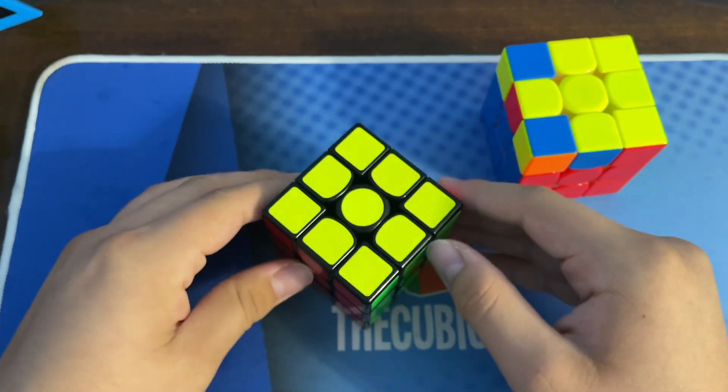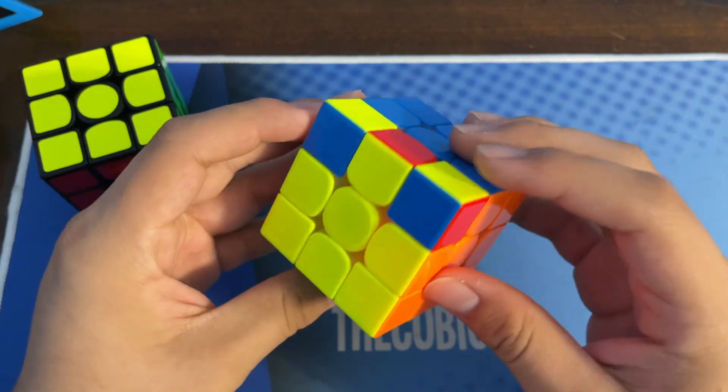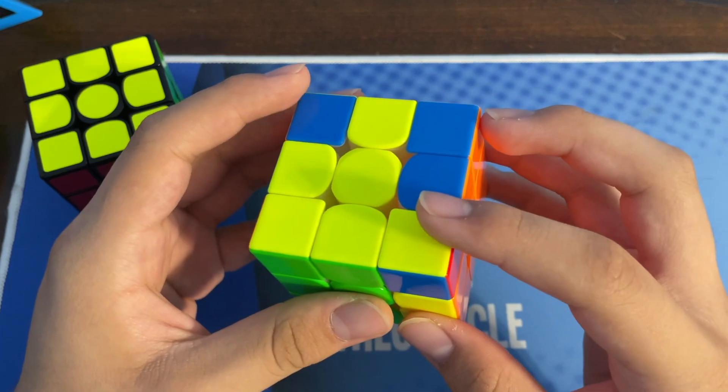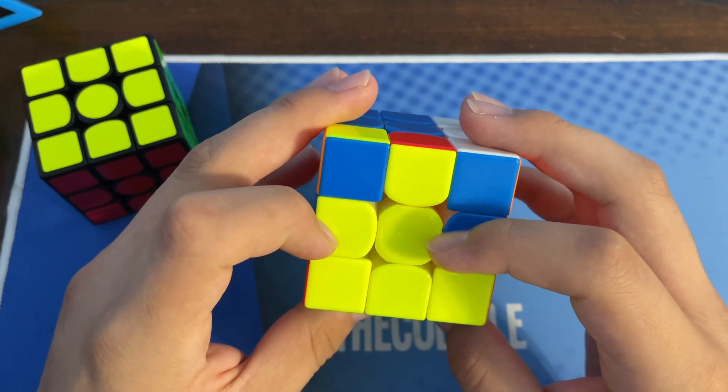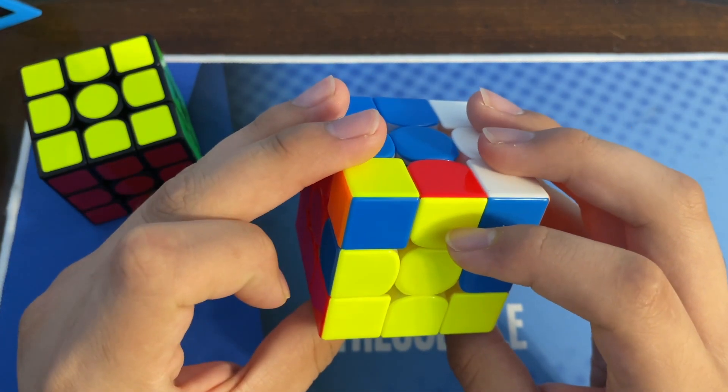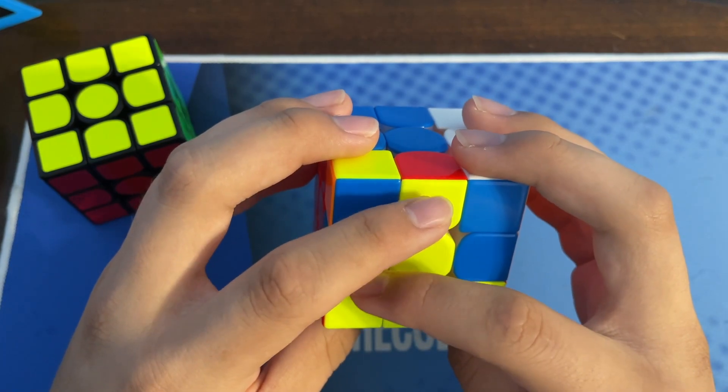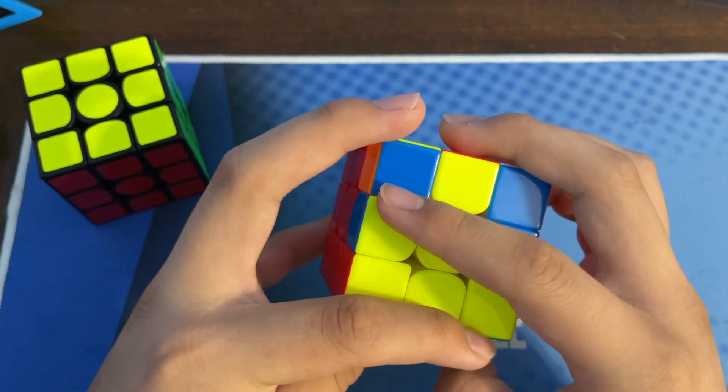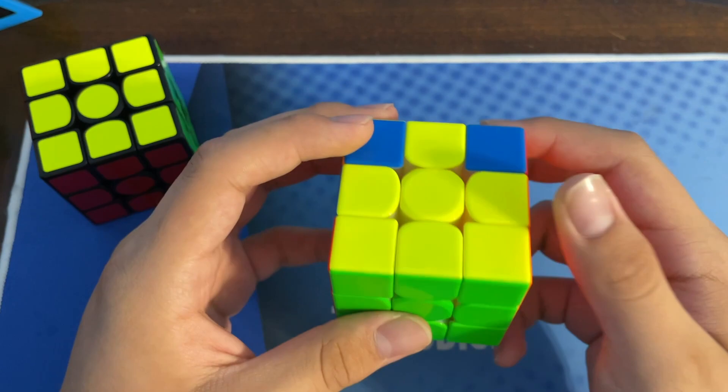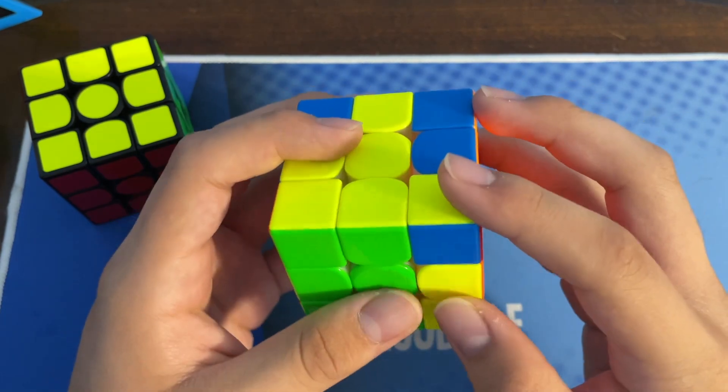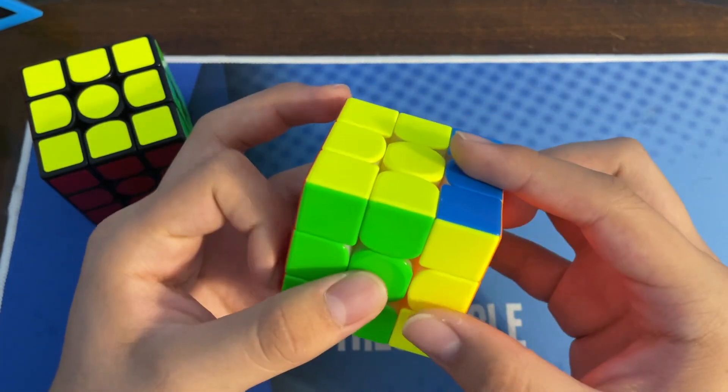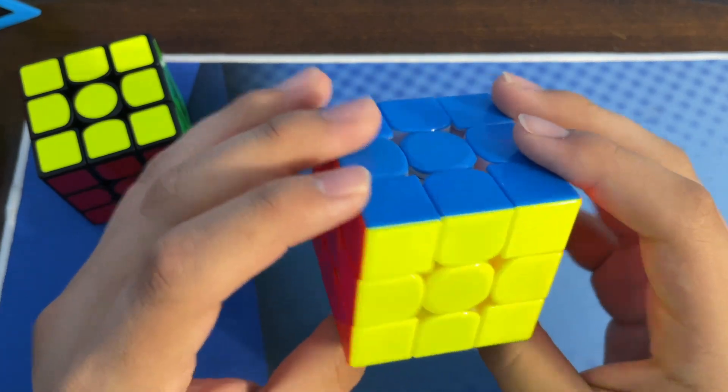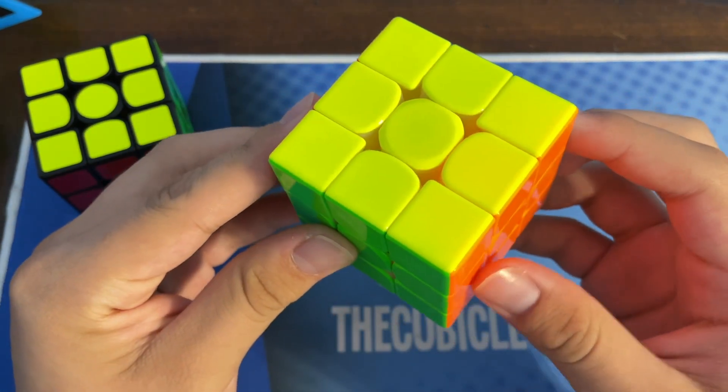For our next case, by moving this corner here we have set up our Y perm where these two would get swapped into the solved position and these two would get swapped into the solved position. You're going to do R prime followed by a Y perm followed by R, and you should have the cube solved.